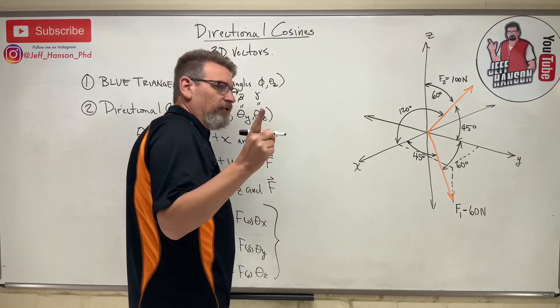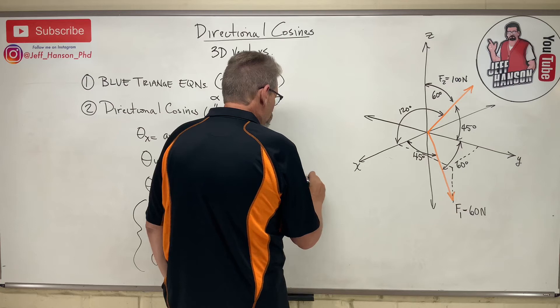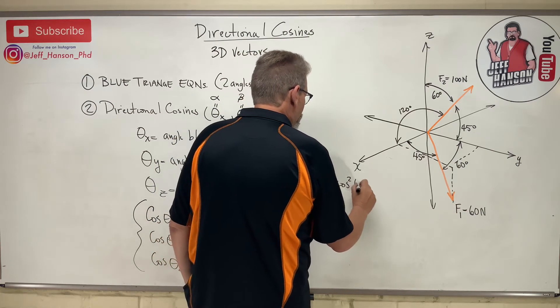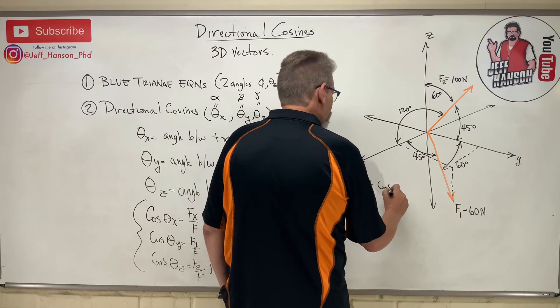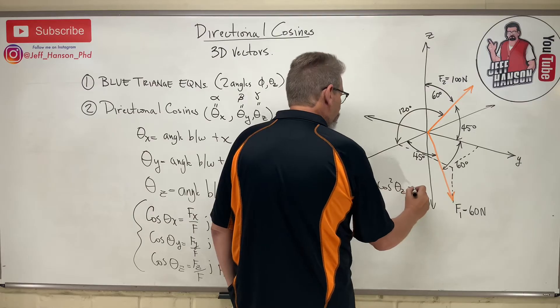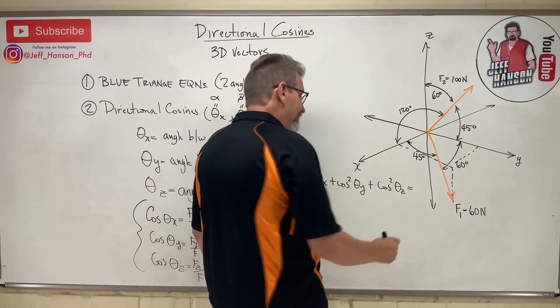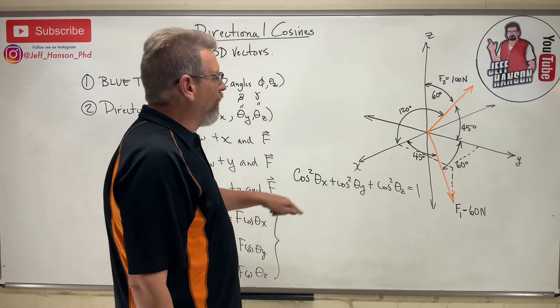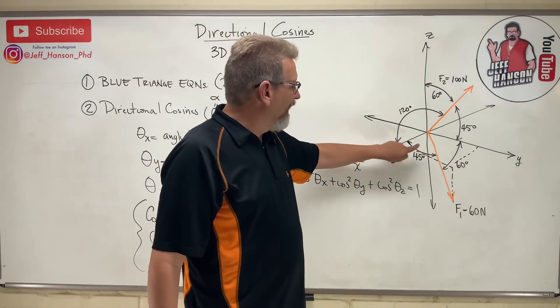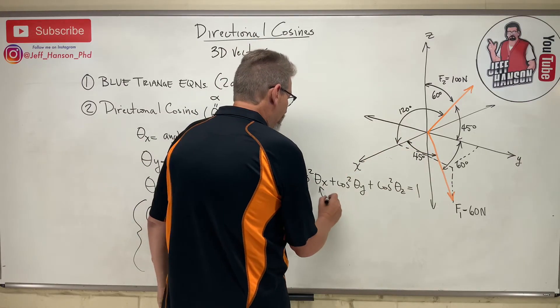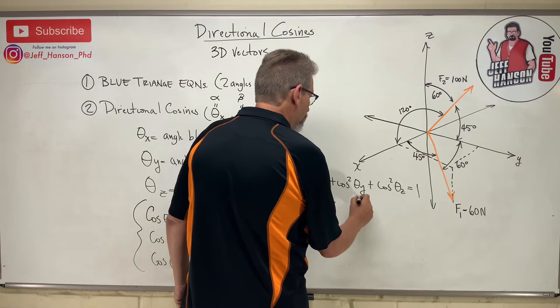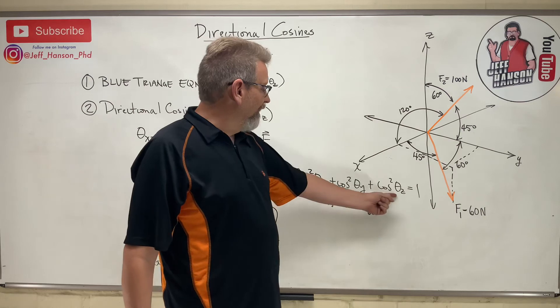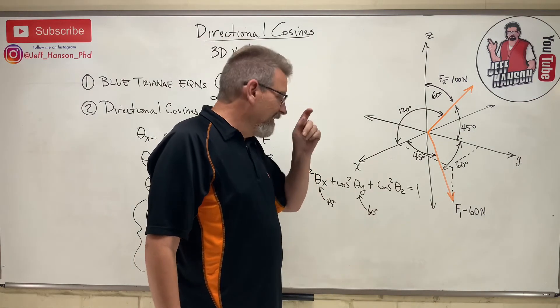Here's theta z. You got to remember this little trig identity. Cosine squared theta x plus cosine squared theta y plus cosine squared theta z equals, drumroll please, it's like a unit vector equation, one. So here's the deal. I know theta x is 45, I know theta y is 60. If I put a 45 in there and a 60 in there, I can get my calculator out and boom, I can get theta z.